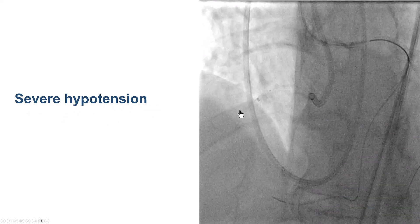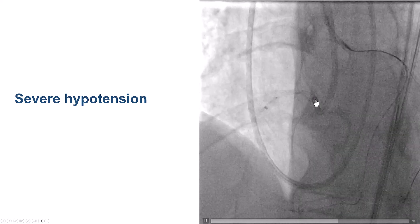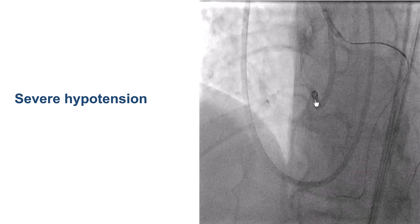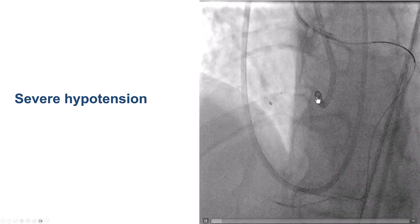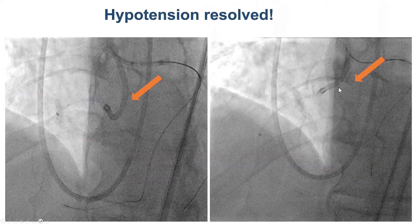At this point, the patient developed severe hypotension, which corrected after pulling the guide back. This is one of those subtle but potentially dramatic events where the guide catheter can lean against the aortic valve, causing severe aortic regurgitation. All we did was pull back the guide catheter, and the hypotension immediately corrected. When there is sudden onset of hypotension and the guide is low on the aortic cusps, the easy way to check is to simply pull the guide back — if it is causing aortic regurgitation, there should be immediate correction of hypotension.